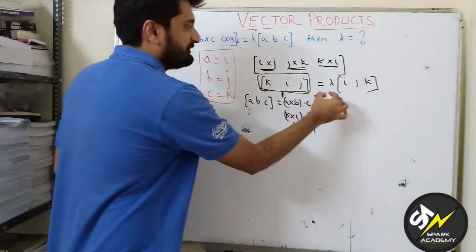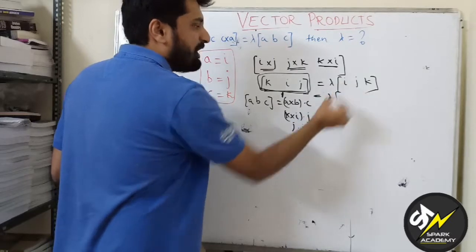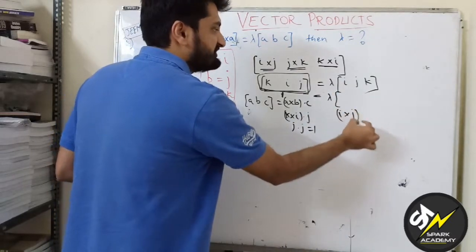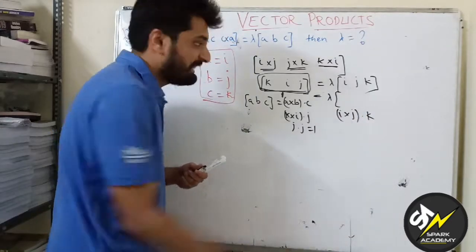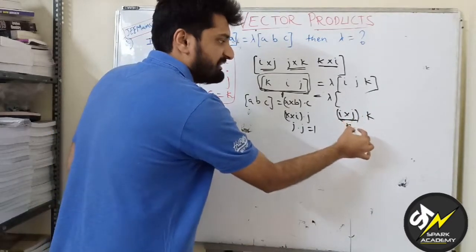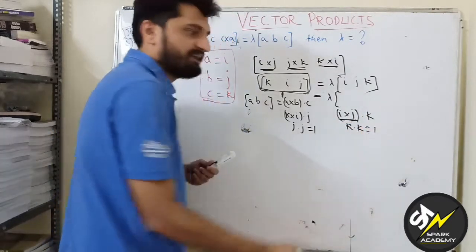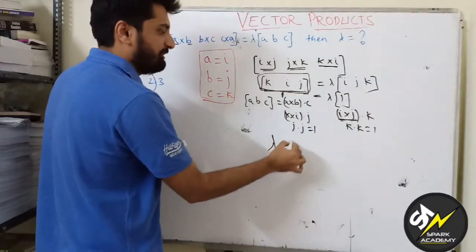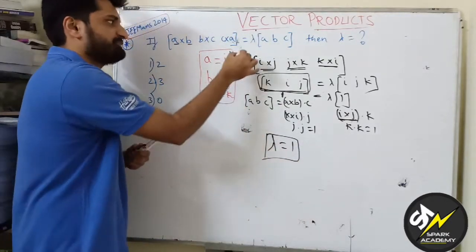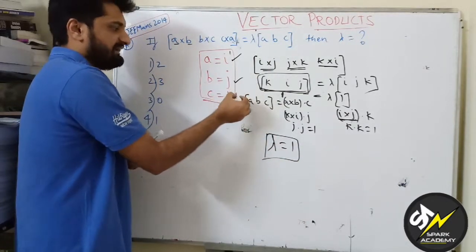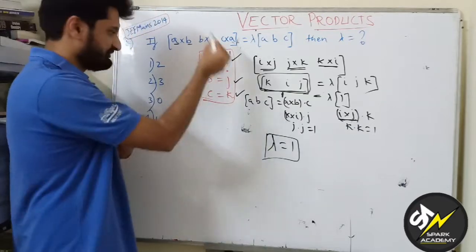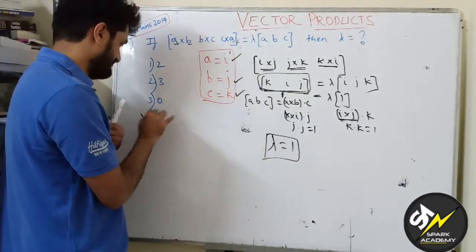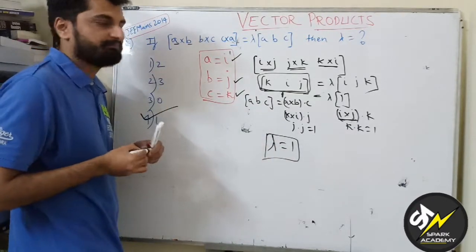This equals λ times box(i,j,k). Again I can write this as (i×j)·k. i×j we know the value is k, and again k·k is also 1. So we got the value of λ as 1 just by simply substituting a as i, b as j, c as k. The answer is λ equals 1, which is the fourth option. Thank you very much.